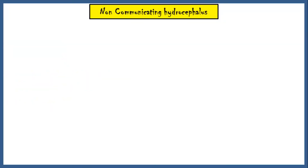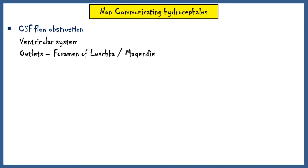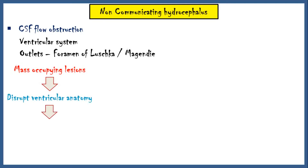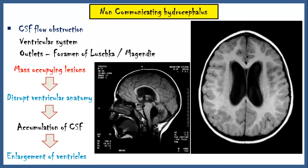Non-communicating hydrocephalus occurs when there is an obstruction to the flow of CSF within the ventricles or its outlets, like the foramina of Luschka and Magendie. The major cause is mass-occupying lesions within the brain, which disrupt the ventricular anatomy, leading to accumulation of CSF and enlargement of ventricles. These images demonstrate the enlargement of ventricles in non-communicating hydrocephalus.